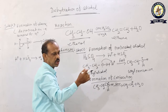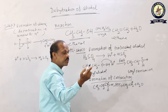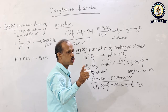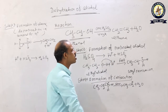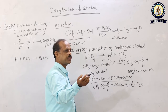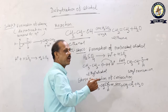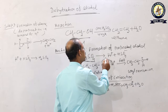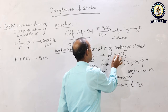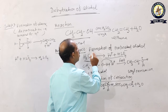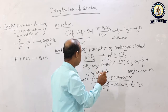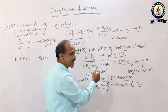The mechanism of this reaction takes place in three steps. The first step is the formation of protonated alcohol, also called the formation of an oxyanium ion, because a positive charge is on the oxygen. Sulfuric acid dissociates to form H⁺ and HSO₄⁻ (bisulfate). The first step is protonation of the alcohol.